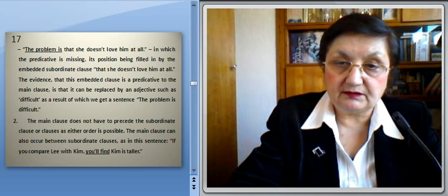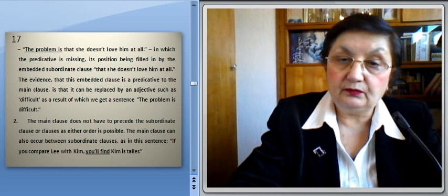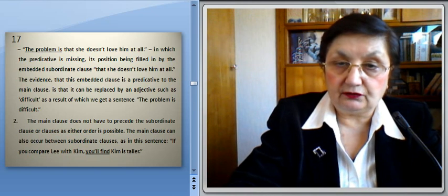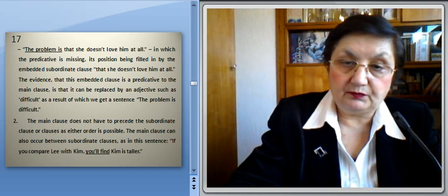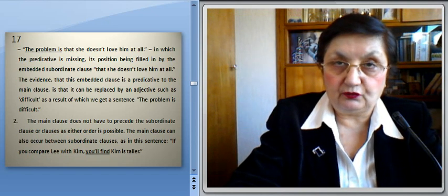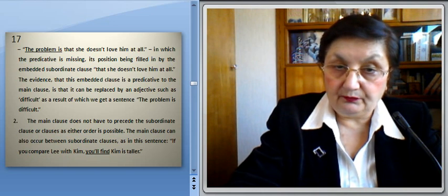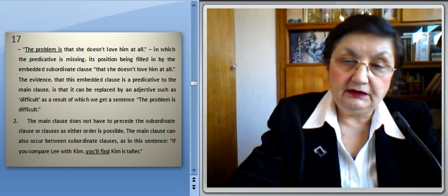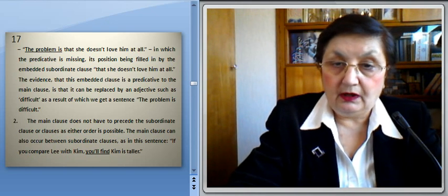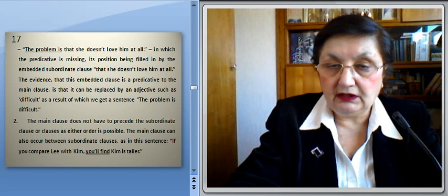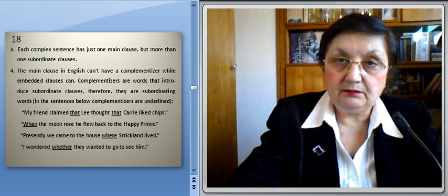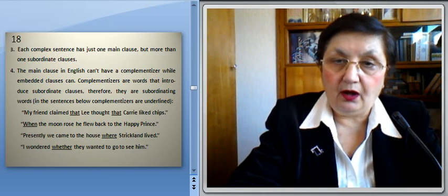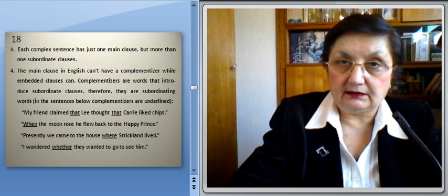The main clause does not have to precede the subordinate clause, as either order is possible. The main clause can also occur between subordinate clauses, as in 'If you compare Lee with Kim, you will find Kim is taller' — here the main clause 'you will find' is located in the middle, preceded by the conditional clause and followed by an object subordinate clause. Each complex sentence has just one main clause but may have more than one subordinate clause. The main clause in English cannot have a complementizer, while embedded clauses can. Complementizers are words that introduce subordinate clauses.